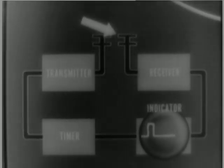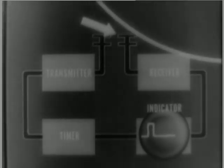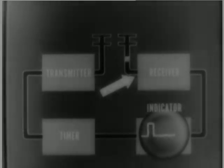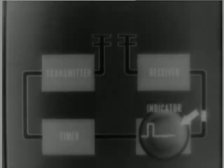When a target comes within range, echo signals are reflected. These signals are picked up by the receiving antenna, amplified by the receiver, and finally register on the baseline of the indicator as a target pip.